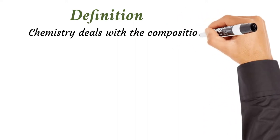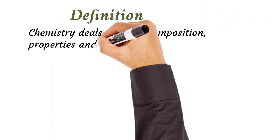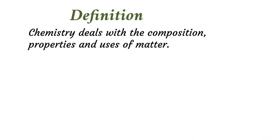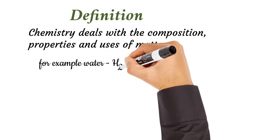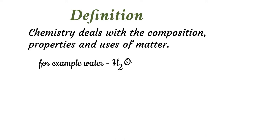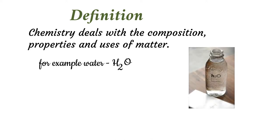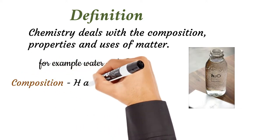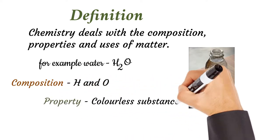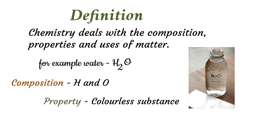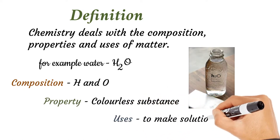Chemistry deals with the composition, properties and uses of matter. For example, water H2O has the following composition, property and uses. The composition of water is hydrogen and oxygen. One of the properties is a colorless substance, and it can be used for making solutions.